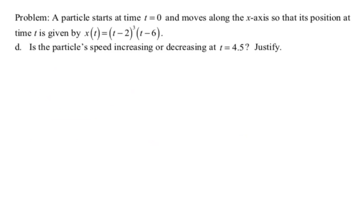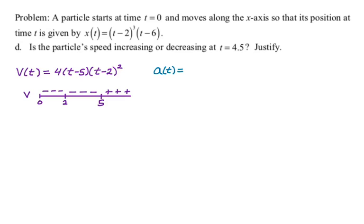All right, let's take a look at the next part. So is the particle speed increasing or decreasing at t equals 4.5? All right, so for this, I need to know the velocity at 4.5 and the acceleration. So once again, I'm going to borrow all the velocity work from previous parts. So we have that, we already have our sign chart. Now I'm going to deal with acceleration.